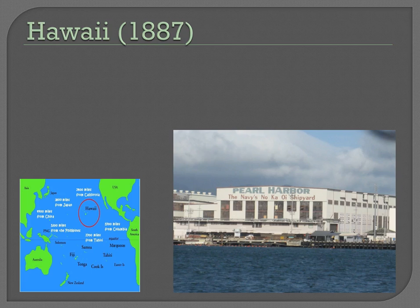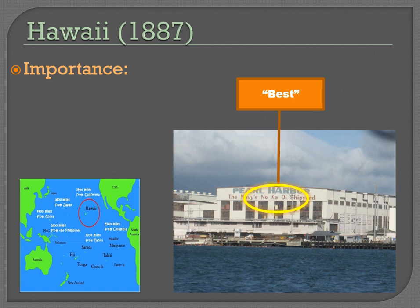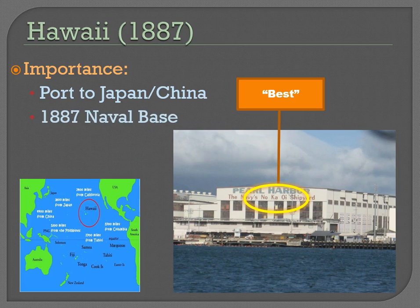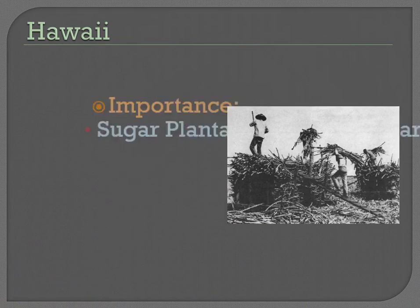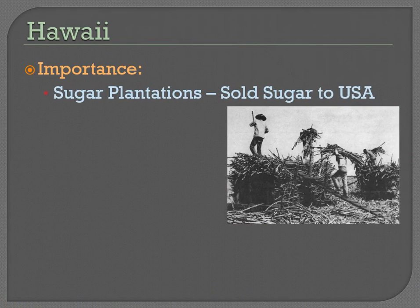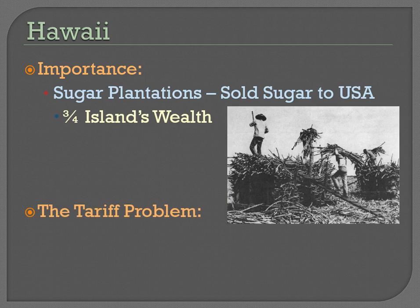And then maybe one of the most significant: Hawaii in 1887. Hawaii at the time was an independent nation, but Hawaii had a lot going for it — a good port roughly halfway between the United States and Japan and China. So if we needed a place to land and service our ships, we could build a shipyard there. In 1887, we want to build a naval base there to use as a refueling station — that's the big reason why we want Hawaii. Hawaii also had a lot of sugar plantations, and most of the plantation owners were selling their sugar to America — three quarters of the island's wealth came from selling sugar to the United States.